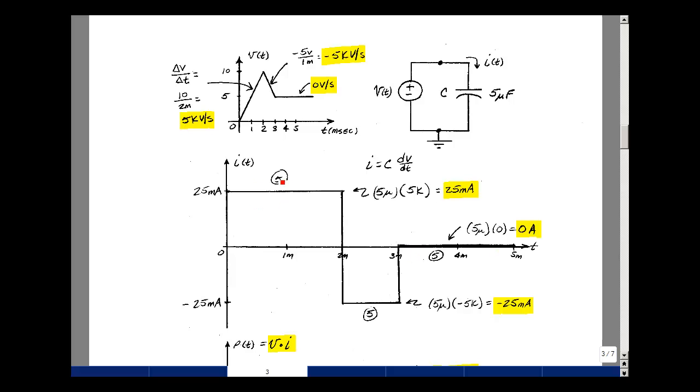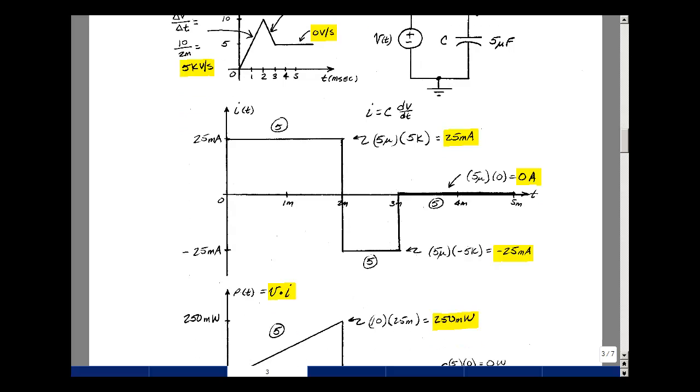This is worth five points, this is worth five points, this is worth five points. Now can you calculate the power absorbed? Well, this is the voltage times the current, and now I have both of those. But in this case, the voltage is changing with time and I've got a constant for the current.